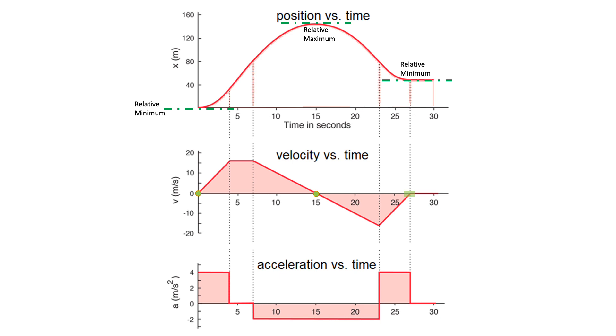Relative minimums happen when you have concave up curves, and relative maximums occur when you have concave down curves, and that depends on the acceleration. Similarly, if you look at the acceleration time graph and where it's zero, that corresponds to relative maximums and relative minimums on the velocity versus time graph.